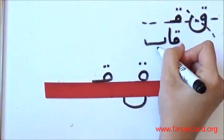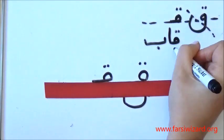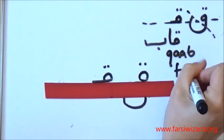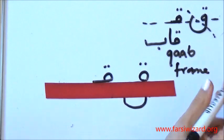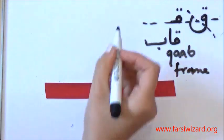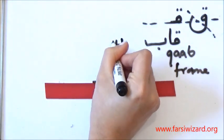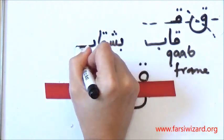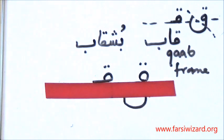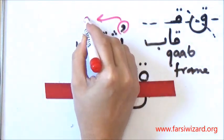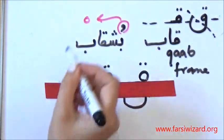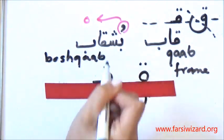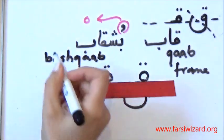The example we have Qab. Qab, which is frame. Also, we have another example. Qab. This one is O, as you remember. Qab, which is plate.